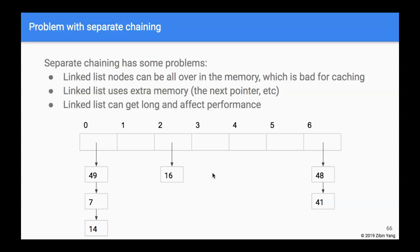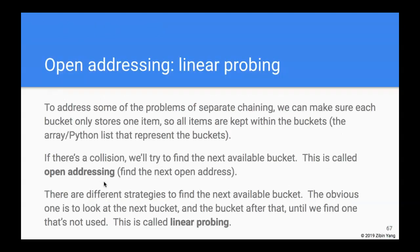Caching is a way to predict where the next things are going to be and make access to them much faster. But if things are all over the place, it's hard to figure out your access pattern — so it's bad for caching. Linked lists also use extra memory because of the pointers, and when there are a lot of collisions the lists can get very long, which makes lookups slow.